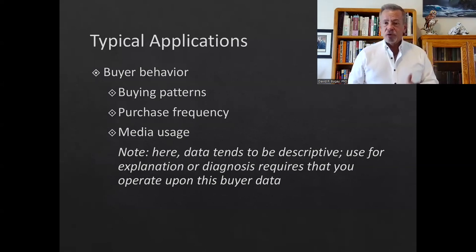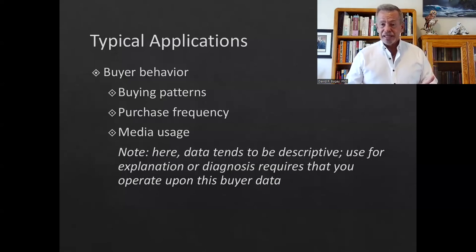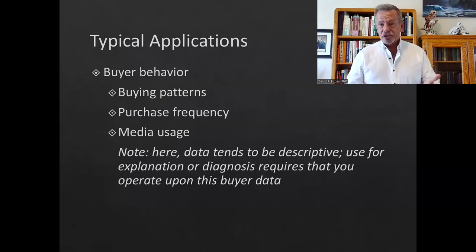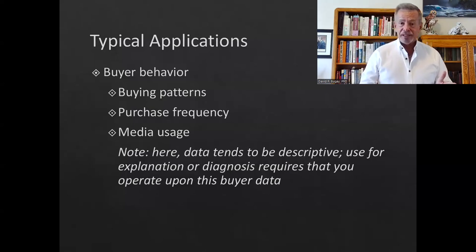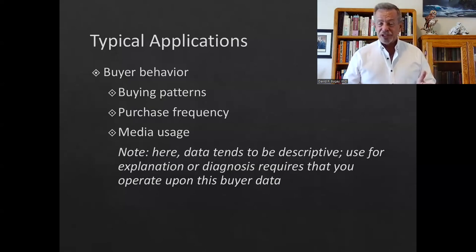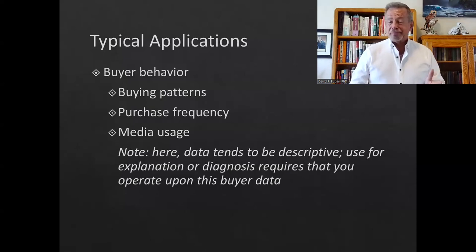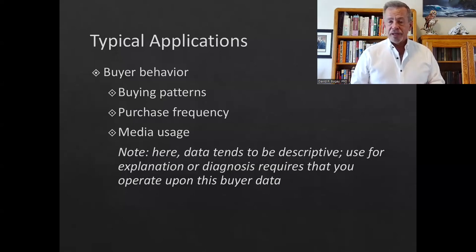Costco deliberately moves stuff to confuse the consumer so they wander around the store. You go in to buy two things and walk out with 17 things — you thought you'd pay four dollars for each item and suddenly you're coming out with a giant bill you never expected to pay. But it's all stuff you found because of the Costco hide-and-seek method of pursuing products.